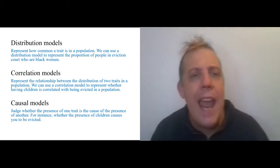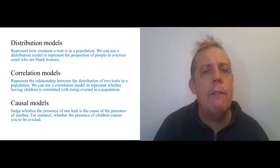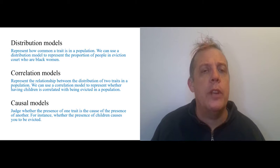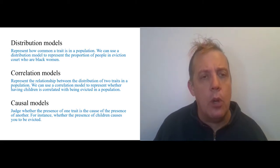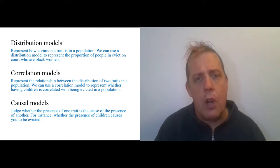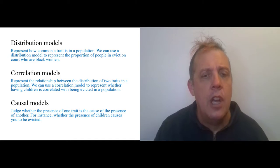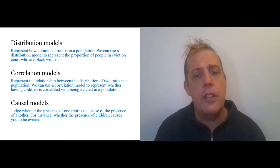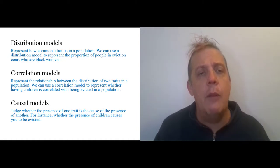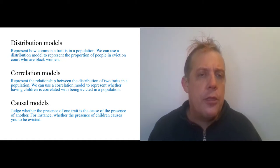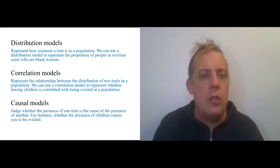When we use quantified categorical statements, we are creating models of the world. In the next video, I'll talk more about what models are and why they're important for understanding science. We're going to draw on something called the semantic view of theories and the work of philosopher of science Ron Giere. In the meantime, I want to talk about three different kinds of things that we do once we have quantified categorical statements.